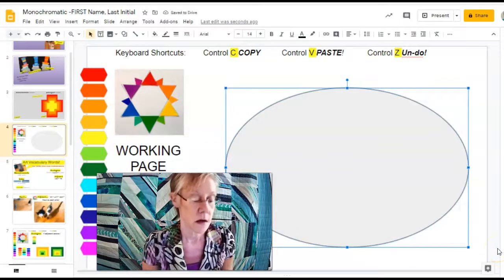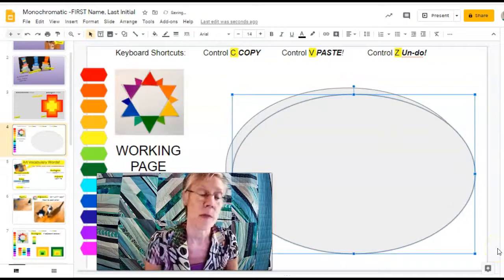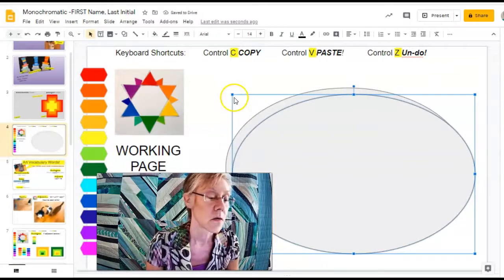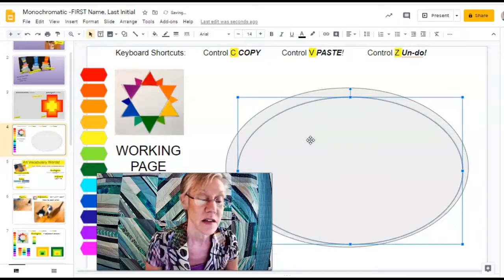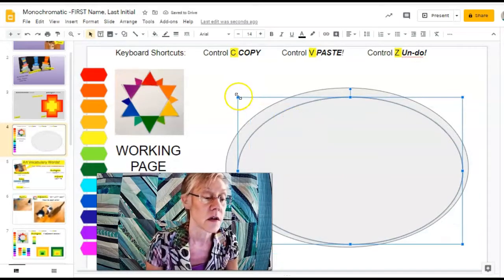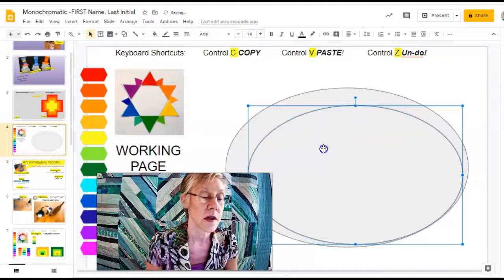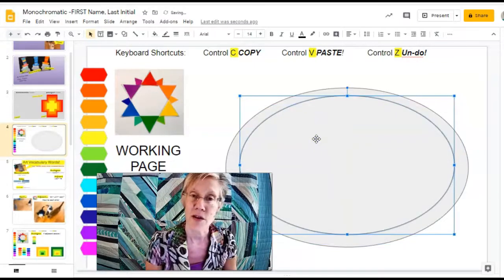Click and drag to make a nice big circle. Command C. Command V. Copy paste. I resize and fit that inside. I'm going to repeat that until I have seven shapes. One smaller than the other.